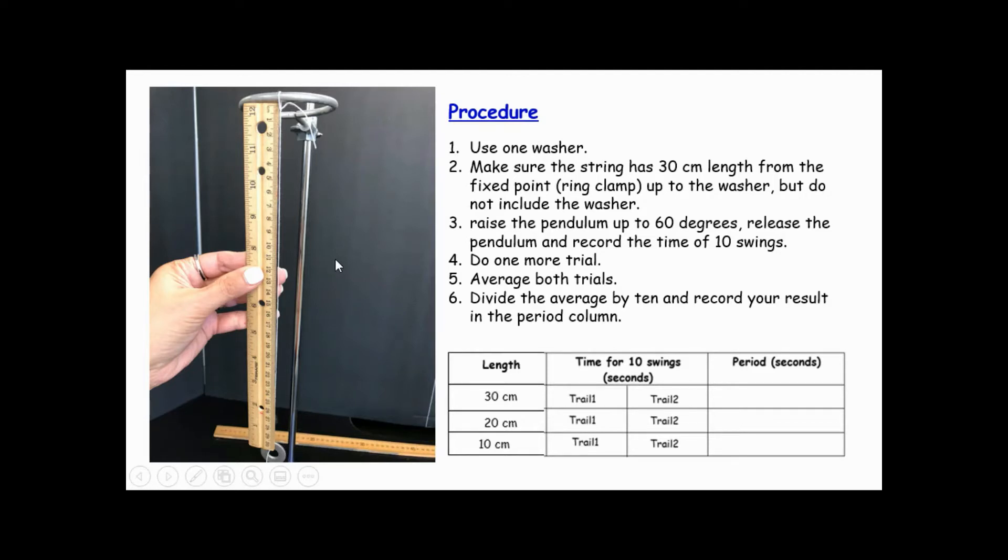In a good scientific experiment, we change one variable at a time and we keep the others constant. In this case, the hanging mass, just one washer, and the angle of release, which is 60 degrees, remain constant the entire experiment.